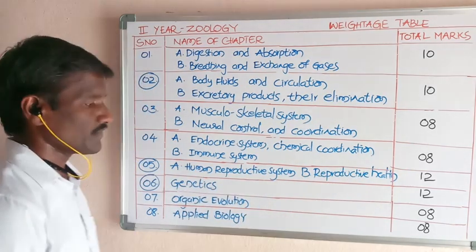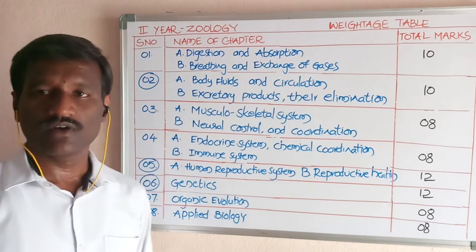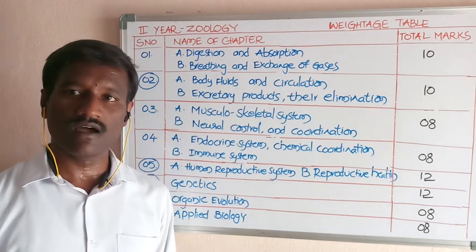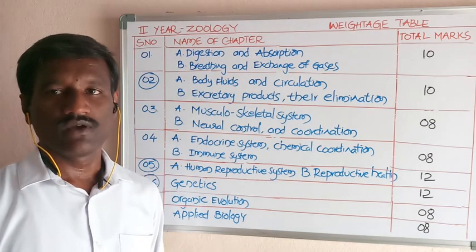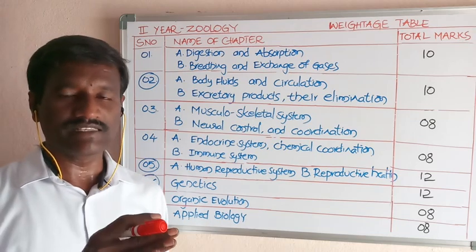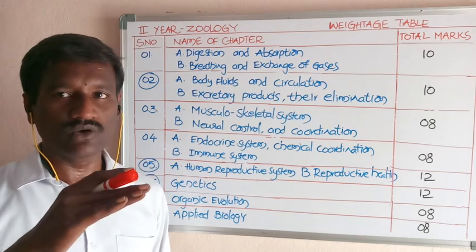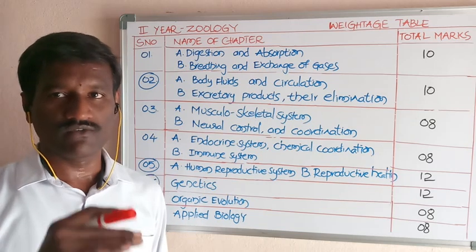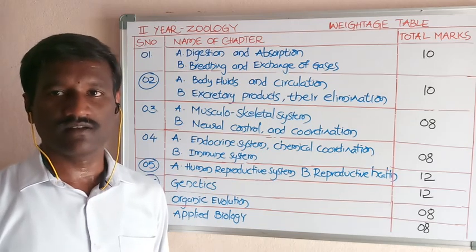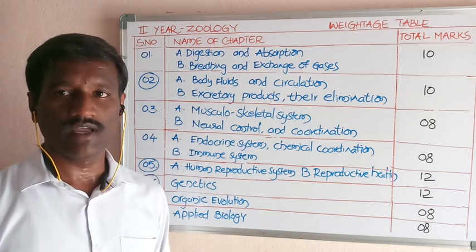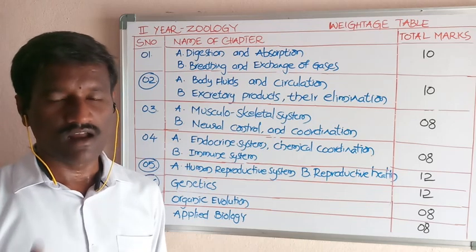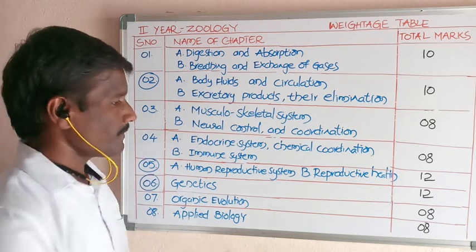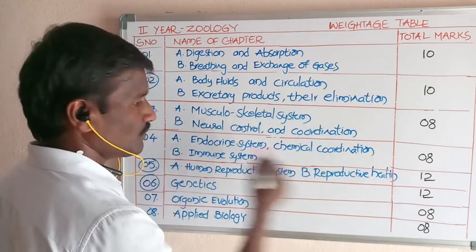The fifth chapter is the human reproductive system and reproductive health. It is divided into two types: female and male reproductive system. It is also related with gamete production, fertilization, and implantation. The weightage of the fifth chapter is 12 marks.